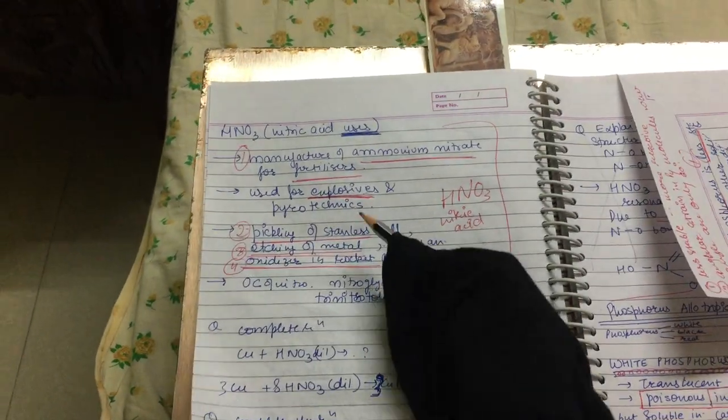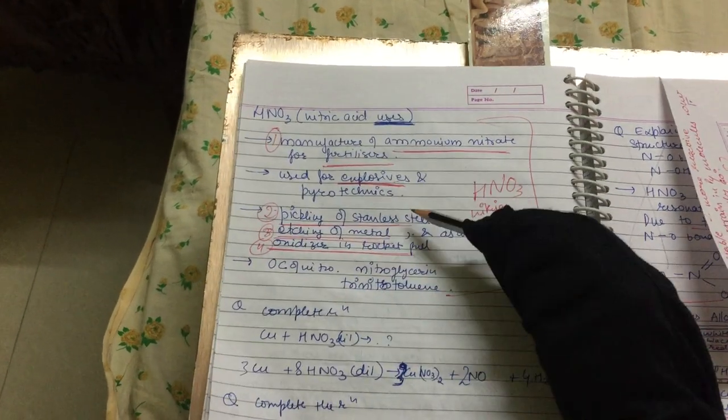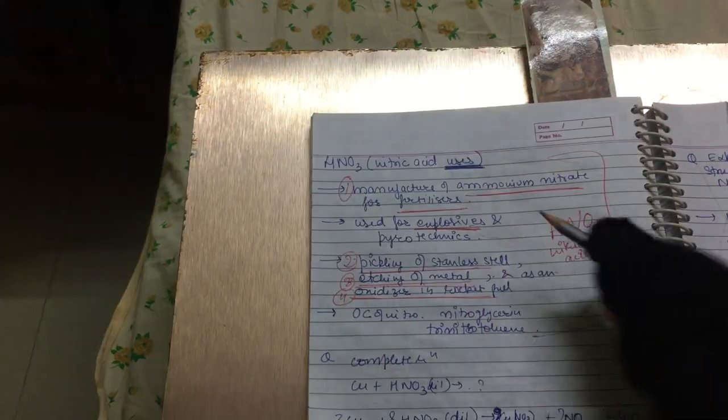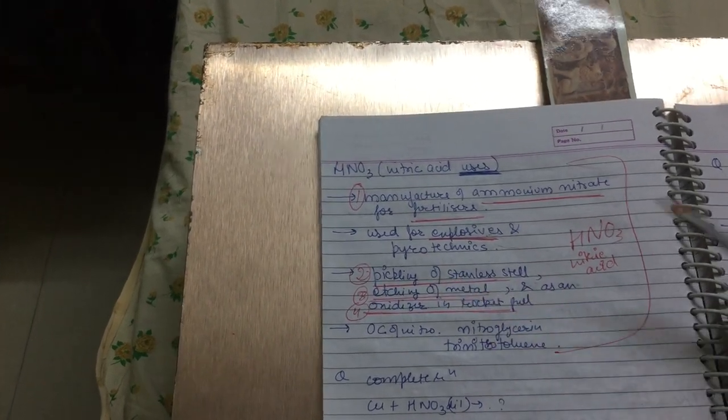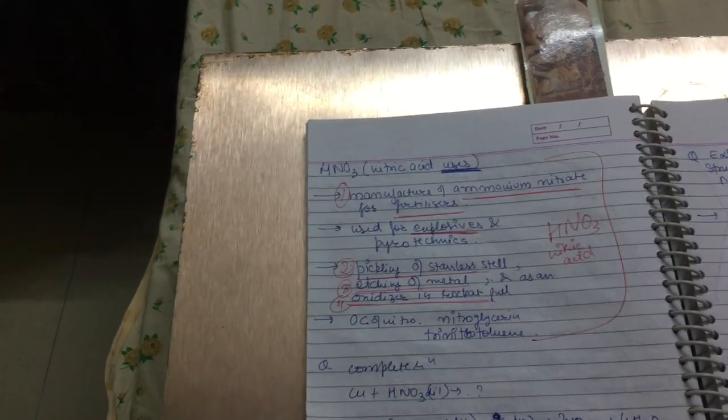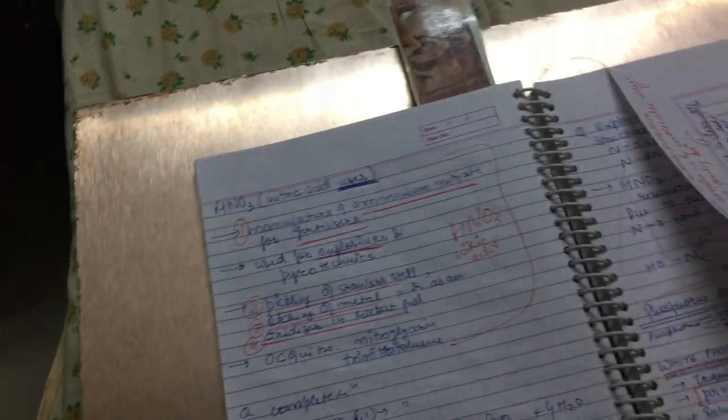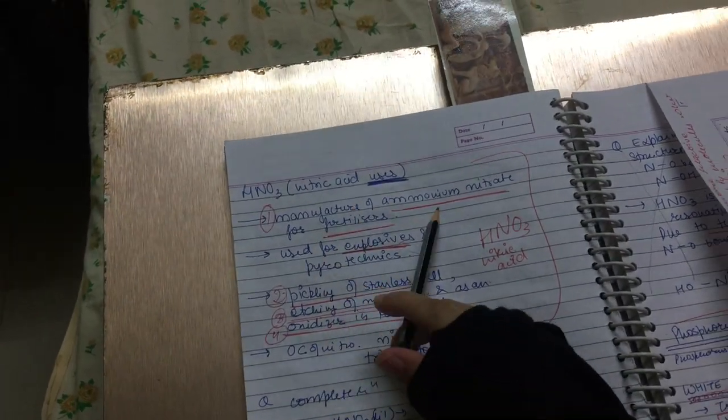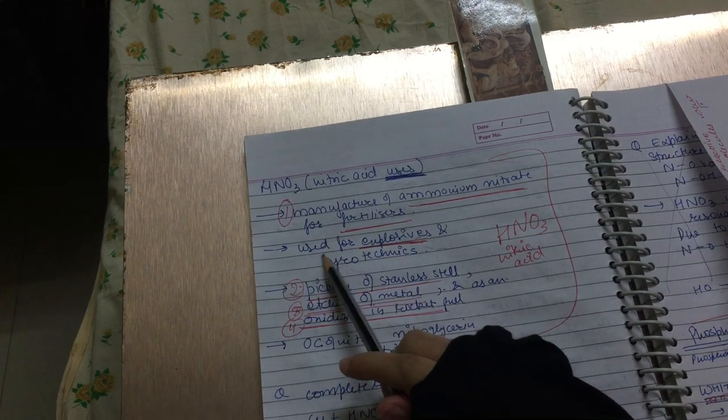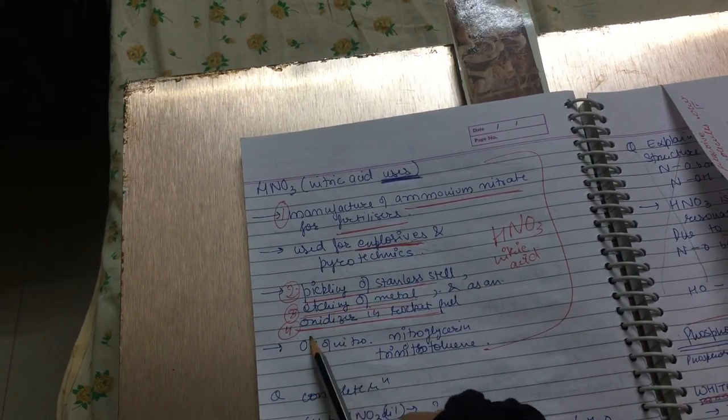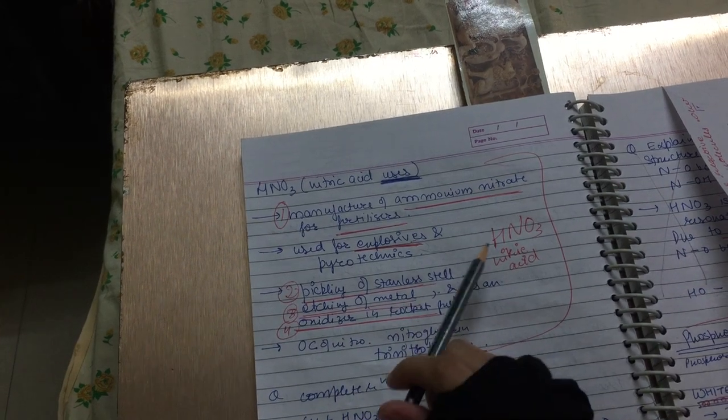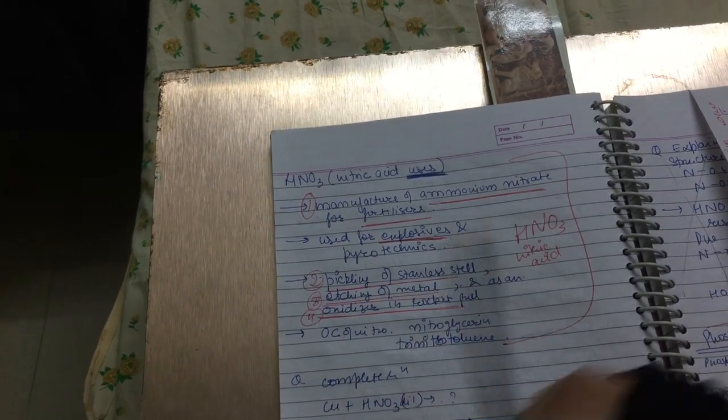Next would be uses. You can ask many times. Ammonia, there are more chances. Uses: manufacture of ammonium nitrate for fertilizers, used for explosive and pyrotechnics, pickling of stainless steel, etching of metal, oxidizer in rocket fuel. These are uses. That's it.